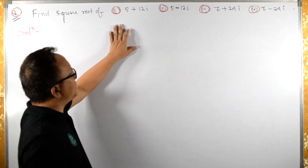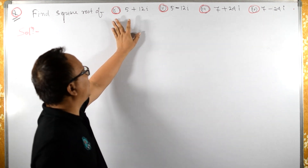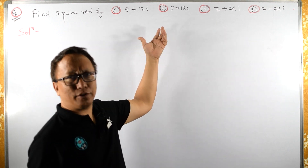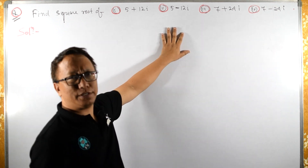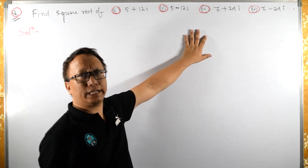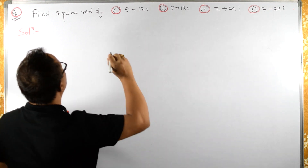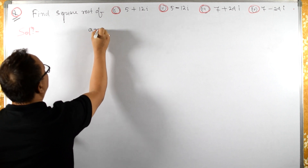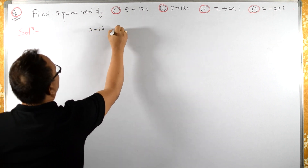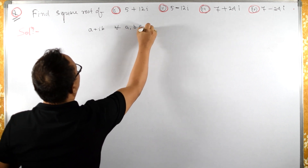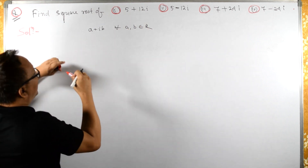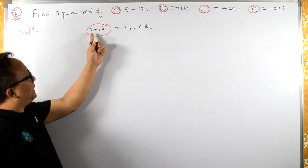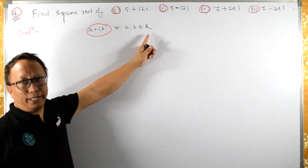So we have 4 questions here, and out of 4 questions I will solve 2. Try to understand the concept. Remember: a complex number is of the form a plus ib, where a and b belong to the real numbers. Any complex number is of this form, and a and b should be real numbers.